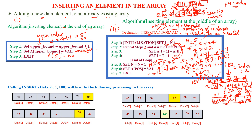Using the same algorithm, we will now write a program. Here is a simple example: calling insert(data, 6, 3, 100). Here 'data' is the array name, 6 is the number of elements, 3 is the position, and 100 is the value to be inserted.